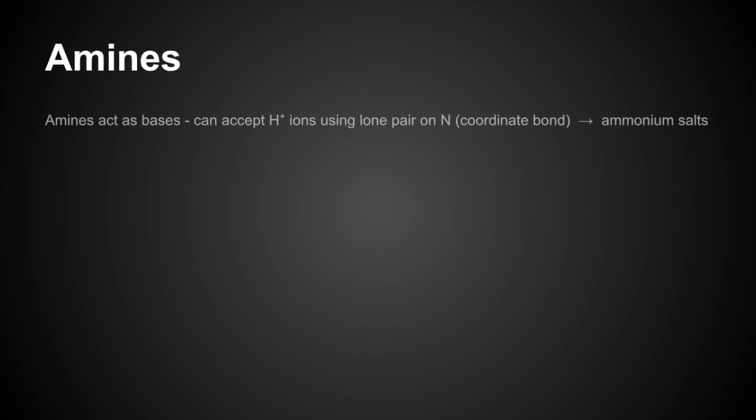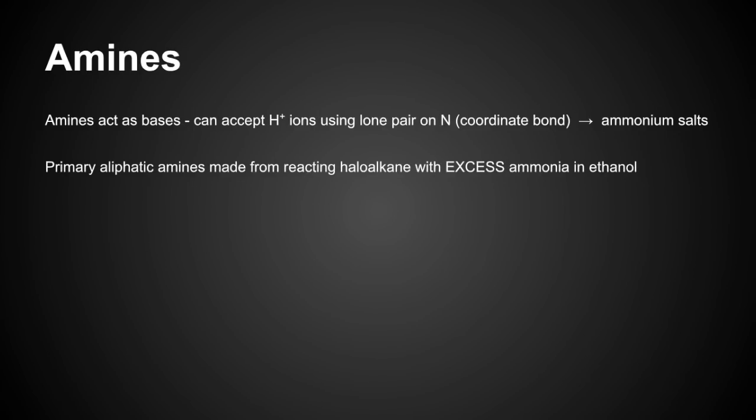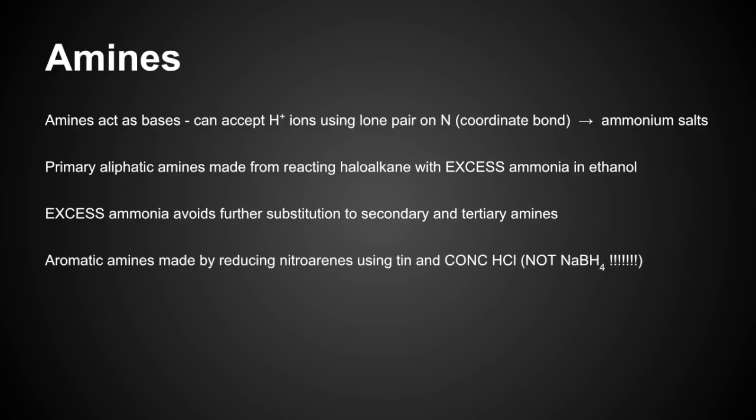Moving on to amines. Amines can act as bases, they can accept H+ ions, by using the lone pair on the nitrogen to form a coordinate or dative covalent bond, and we get ammonium salts. Primary aliphatic amines are made by reacting a haloalkane with an excess of ammonia in ethanol. We use excess ammonia to avoid any further substitution to get secondary and tertiary amines. Aromatic amines are made by reducing nitro-arene, something like nitrobenzene, using tin and concentrated HCl, not NABH4, which is a different reducing agent. Amines can also be made by reducing nitriles using hydrogen and a nickel catalyst. The CN group in the nitrile is turned into a CH2NH2 group for the amine, so we need two moles of hydrogen per CN group reduced.